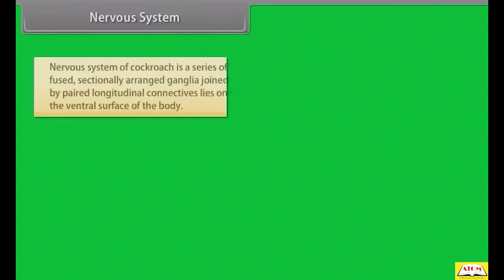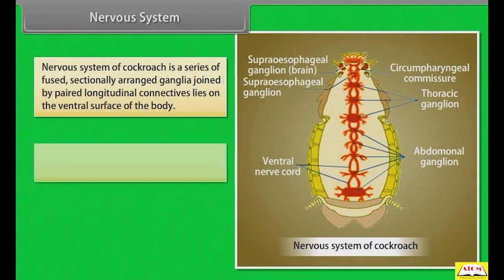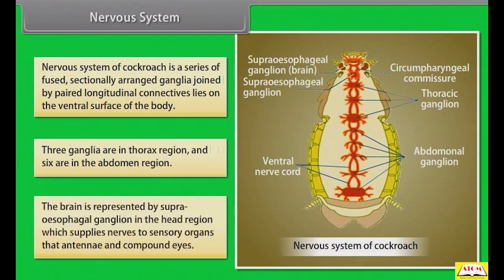The nervous system of cockroach is a series of fused, segmentally arranged ganglia joined by paired longitudinal connectives on the ventral surface of the body. Three ganglia are in the thorax region and six are in the abdomen region. The brain is represented by the supra-oesophageal ganglion in the head region, which supplies nerves to sensory organs — the antennae and compound eyes.